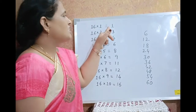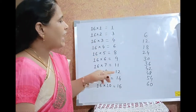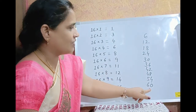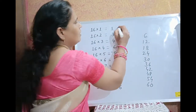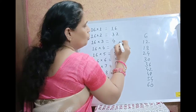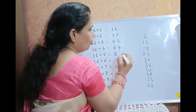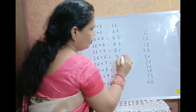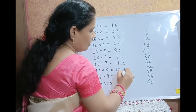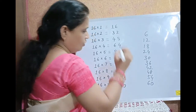For the units digit of the table of 16, you have to write the same unit digit as the table of 6: 6, 2, 8, 4, 0, 6, 2, 8, 4, 0.